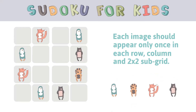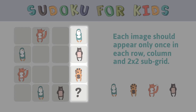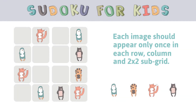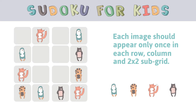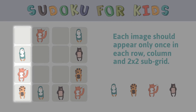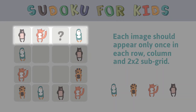Each image should appear only once in each row, column, and two-by-two subgrid. Can you tell what should come here? Well done! What should go here? Excellent! Can you tell what's missing? Good job! What should go here?